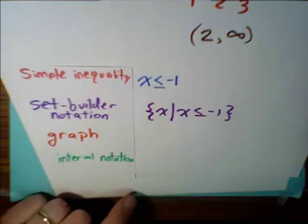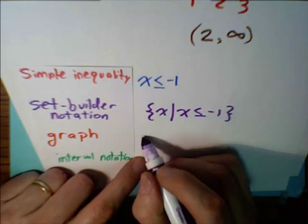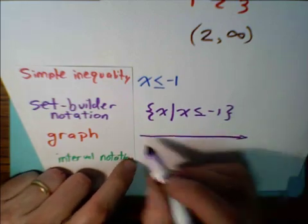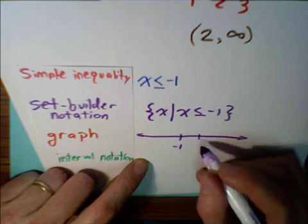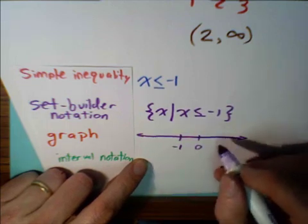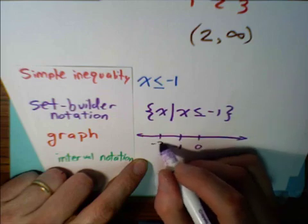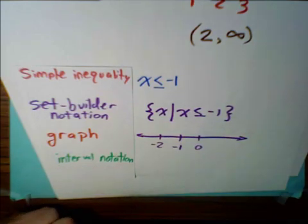And let's graph this, drawing a number line. We want negative 1 to be prominent. Sometimes you can include 0. Not really important. I like to include a couple numbers around there.